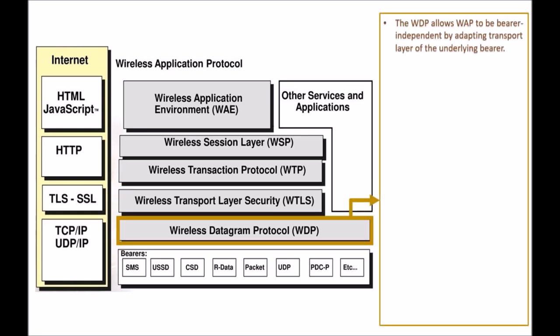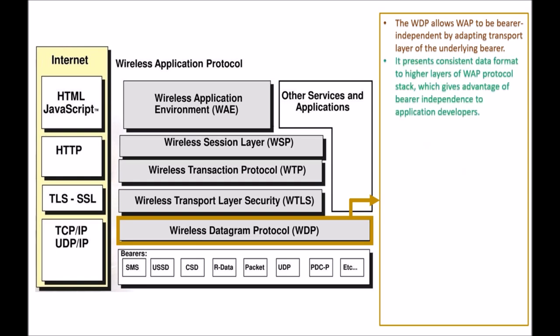Next we are having WDP, which stands for Wireless Datagram Protocol. The WDP allows WAP to be bearer independent by adapting the transport layer of the underlying bearer. It presents a consistent data format to the higher layers of the WAP protocol stack, which gives the advantage of bearer independence to application developers. WDP provides application addressing by port numbers, optional segmentation, reassembly and error detection.